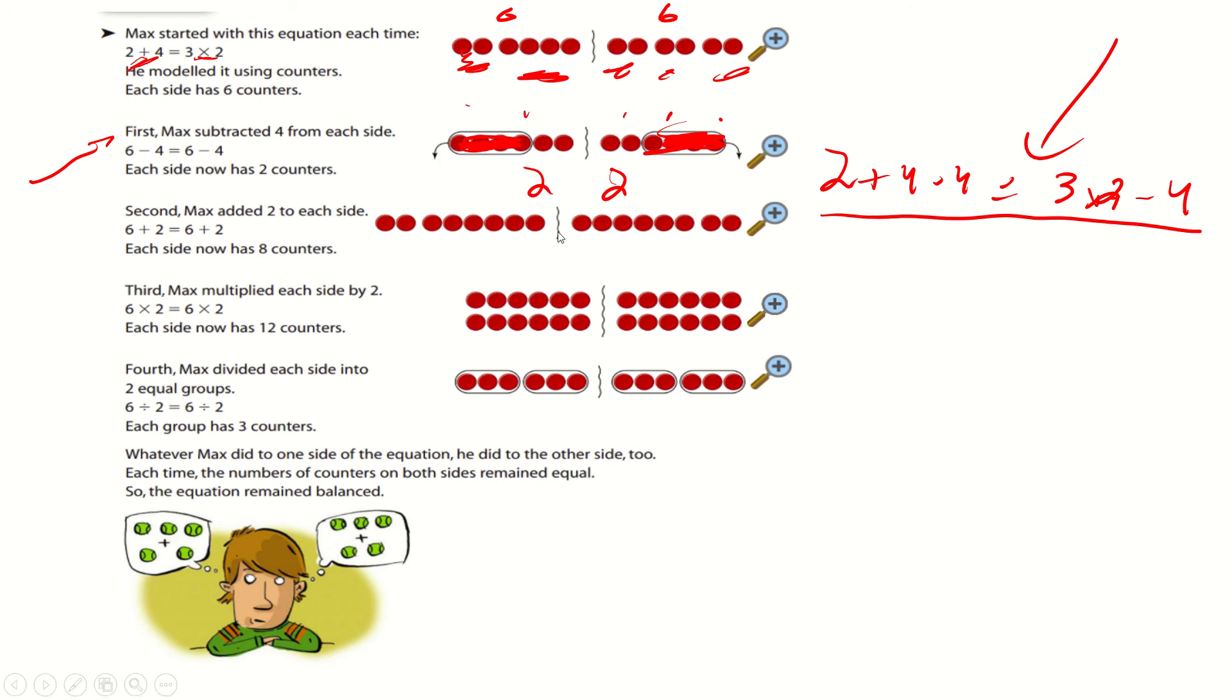The next one, Max added 2 to each side this time. So, there were 6 here, we added 2. There were 6 here, we added 2. Well, the answer is still going to be 8 on each side. And our equations would look like this: 2 plus 4 is 6, plus 2 is 8. 3 times 2, plus 2 is 8. So, all we're doing is doing the same to both sides.